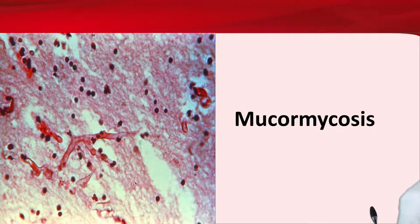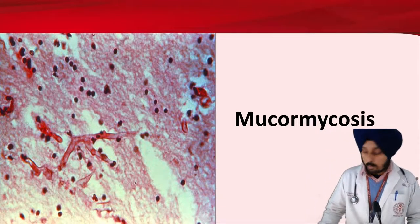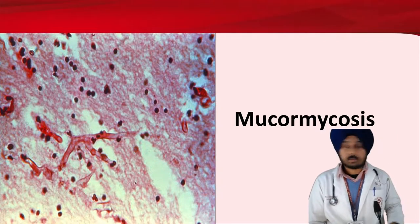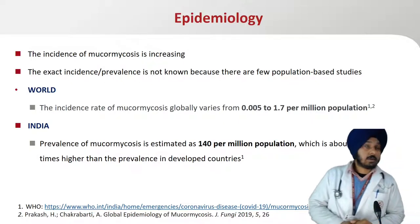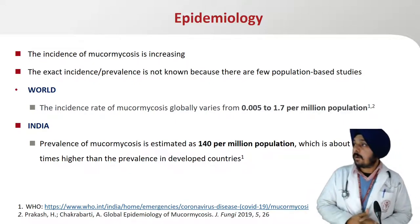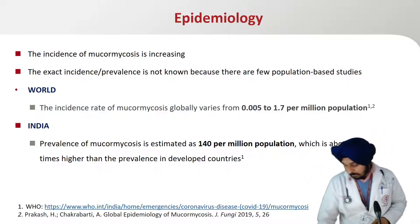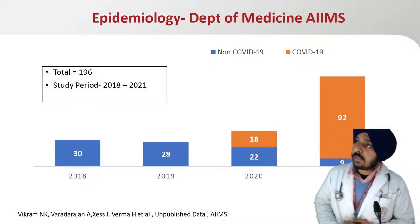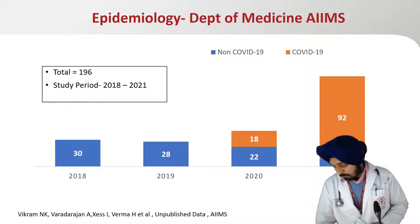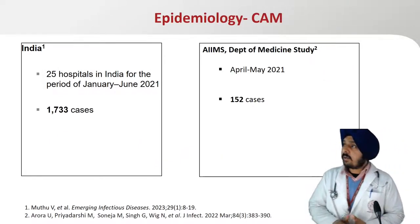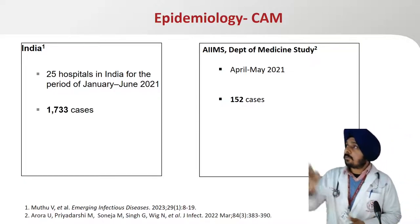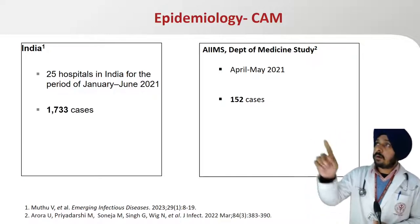Mucormycosis was recently highlighted during the second wave of the COVID-19 pandemic. The worldwide incidence rate is 0.005 to 1.7 per million population. In India, it is estimated to be 140 per million — about 80 times higher than in developed countries. In our department study from 2018 to 2022, a total of 196 cases of mucormycosis were recruited, with the majority in 2021, attributable to COVID-19. Another study across 25 hospitals recruited 1,733 cases in six months. Our departmental study within April to May also recruited 152 cases, all COVID-associated mucormycosis.